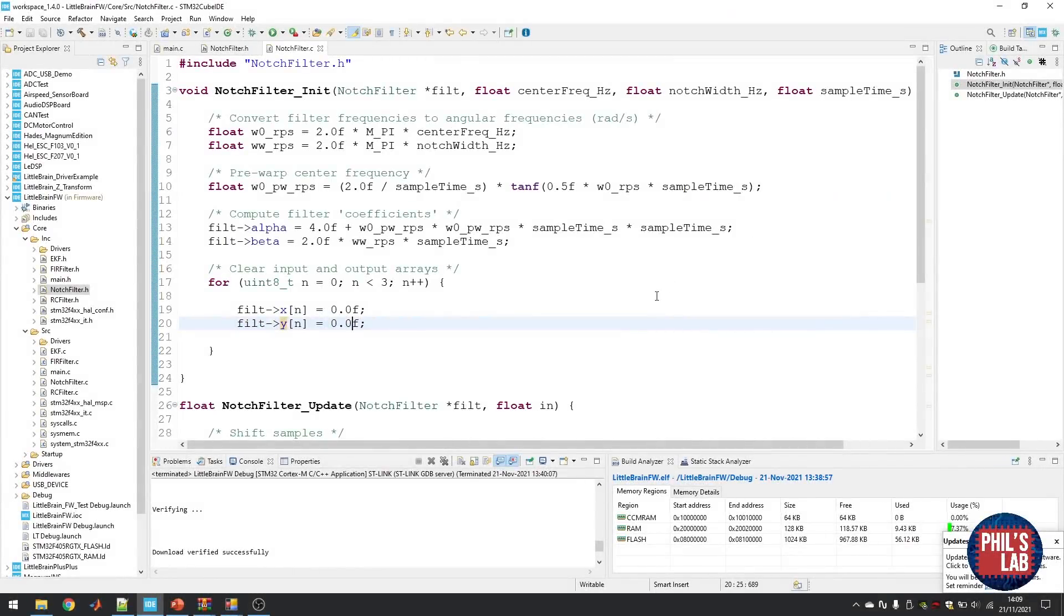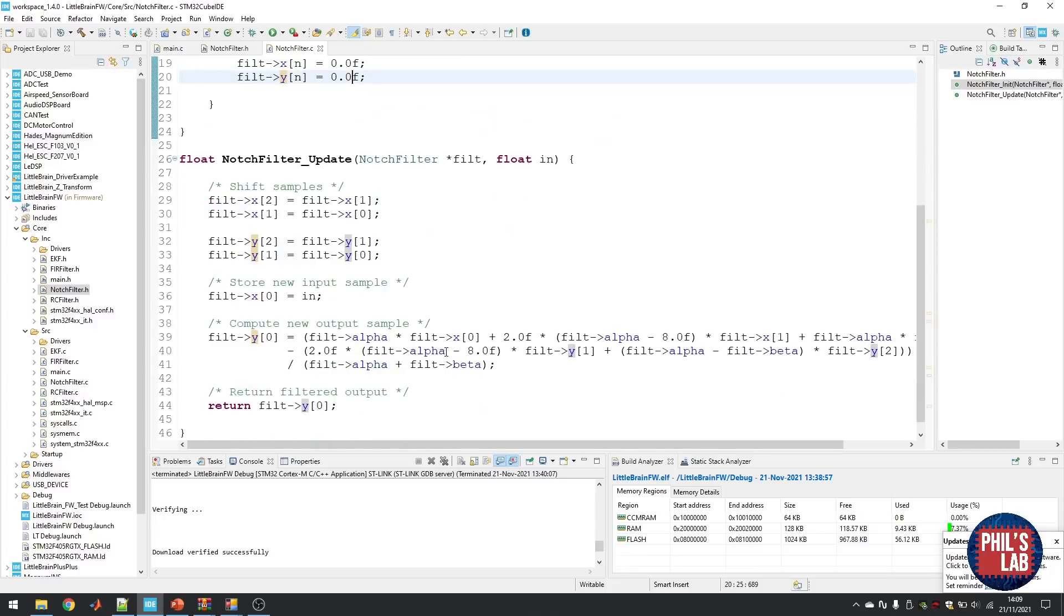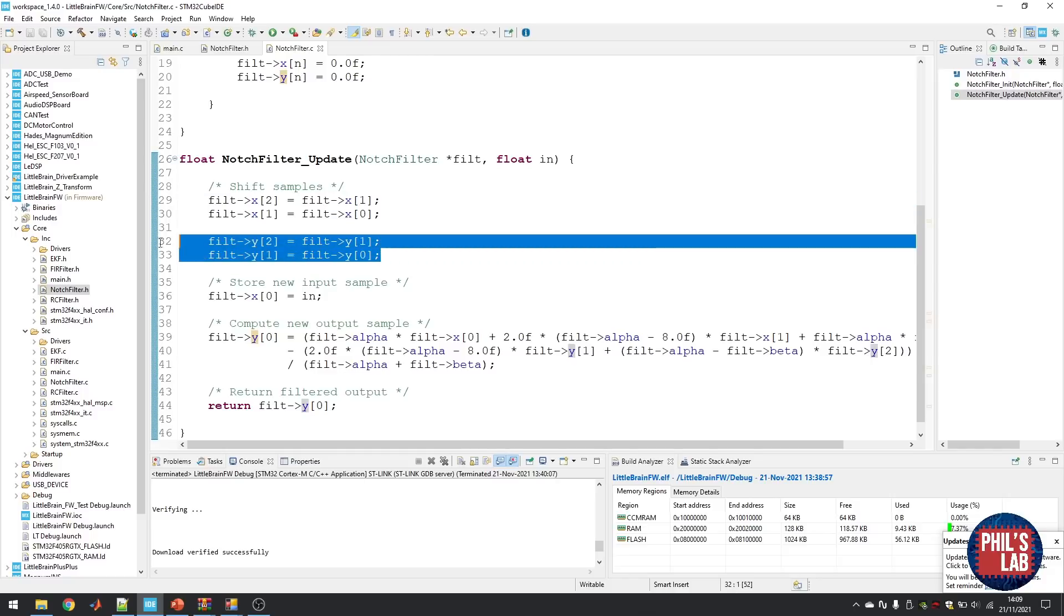Now we can move over to our notch filter update function, which computes the latest output sample. Again, this is a very crude implementation, but for the purposes of demonstration, I think this is a bit better. The first thing we need to do is shift the samples. Every time we get a sample in, we need to shift the samples through our array. So the older sample gets thrown away and replace the previous sample and so forth. So we do that for the input array and for the output array.